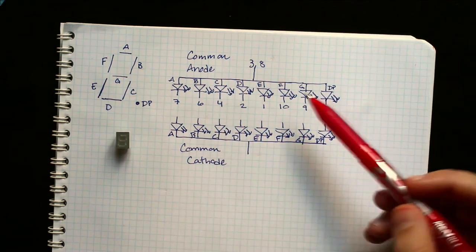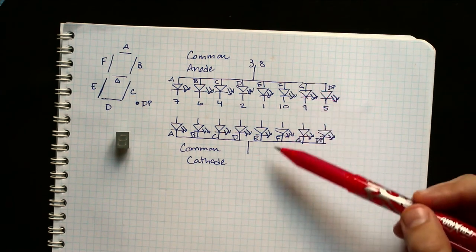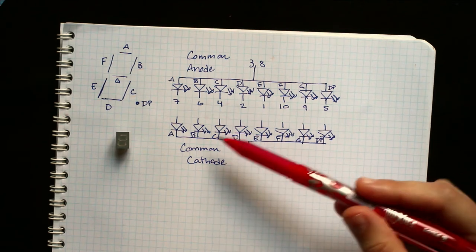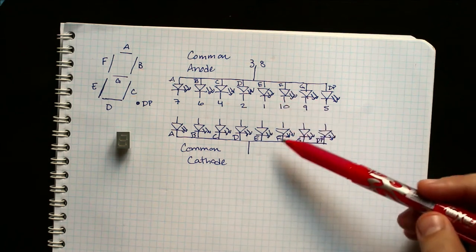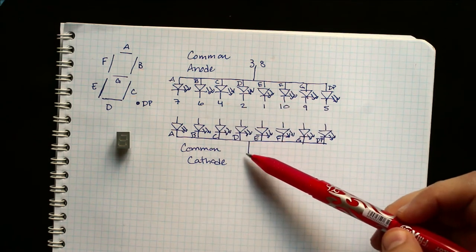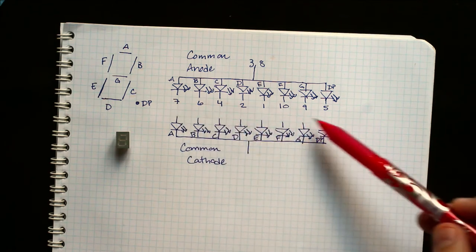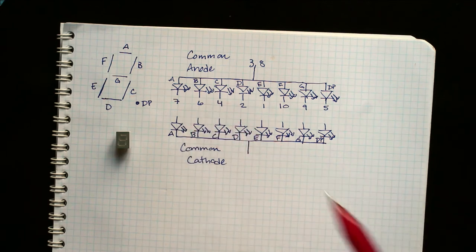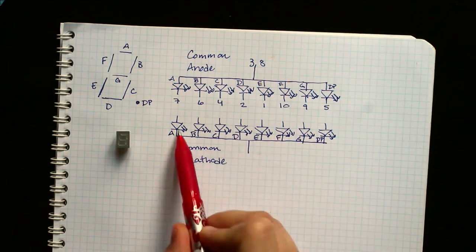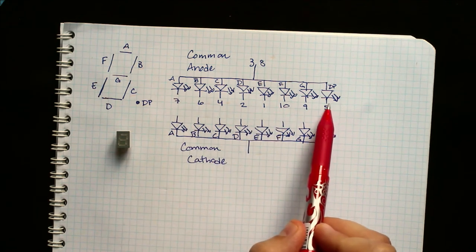They come in two varieties, common anode and common cathode. Basically what that means is the direction that the LED goes. All the LEDs are either going from ground, each segment needs to be connected in this case to the high voltage in the common cathode case, or to ground in the common anode case.